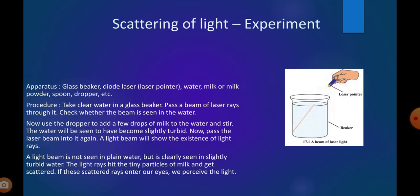Procedure: Take clear water in a glass beaker. Pass a beam of laser rays through it. Check whether the beam is seen in the water. Now use the dropper to add a few drops of milk to the water and stir well. The water will be seen to have become slightly turbid. Now pass the laser beam into it again.